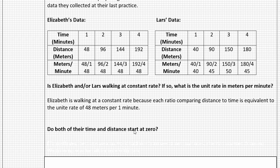Let's continue the analysis. Do both of their time and distance start at zero? This is that second criteria of a proportional relationship. And looking back at their tables, it doesn't exactly tell us. Is there a pattern that you see that might help us figure it out? Well, here's what I noticed. For both Elizabeth and Lars, in their data table, the time increased by one minute each time. So I could backtrack and say, well, if it adds one each time, let's step back and subtract one each time, and the time would be zero minutes. Same for Lars.